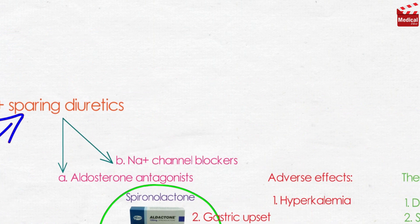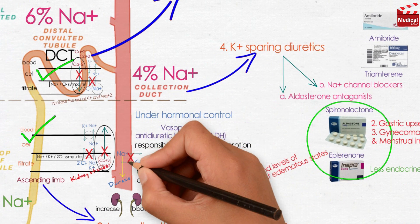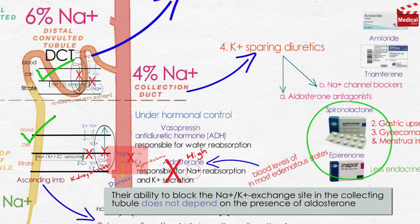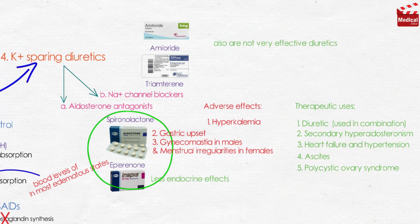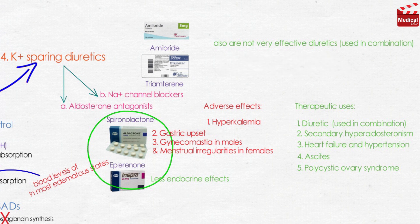Let's talk about the other category: sodium channel blockers. Triamterene and amiloride block sodium transport channels, resulting in a decrease in sodium and potassium exchange. Their ability to block this exchange in the collecting tubule does not depend on the presence of aldosterone. These agents are also not very effective diuretics, so they are commonly used in combination with other diuretics for their potassium-sparing properties. The side effects of triamterene include potassium retention, increased uric acid, and renal stones.